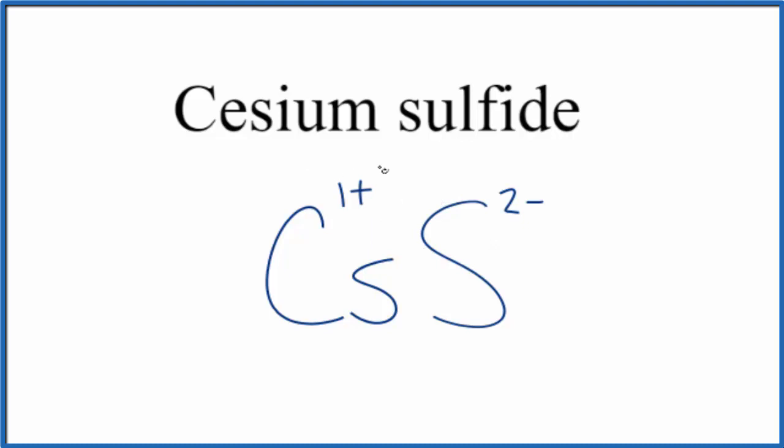It looks like if I had 2 of these cesium ions here, like this, 2 times 1 plus, that would give me 2 plus, that would balance out the 2 minus.